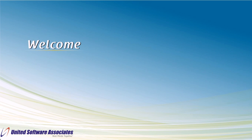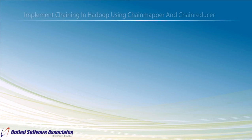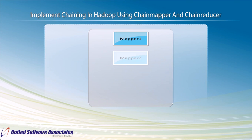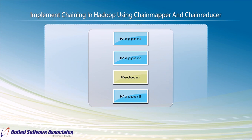Welcome. In this video we will see how to implement chaining in Hadoop using ChainMapper and ChainReducer library classes. Here we first split a single MapReduce job into multiple mappers followed by a reducer, and then if required, another chain of mappers. After that we chain those using ChainMapper and ChainReducer library classes.